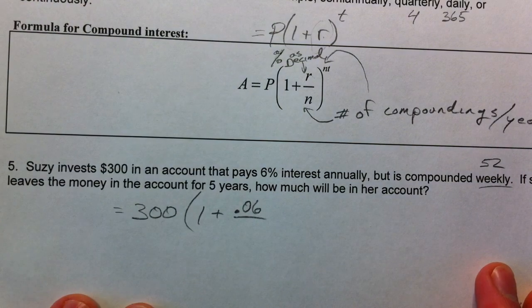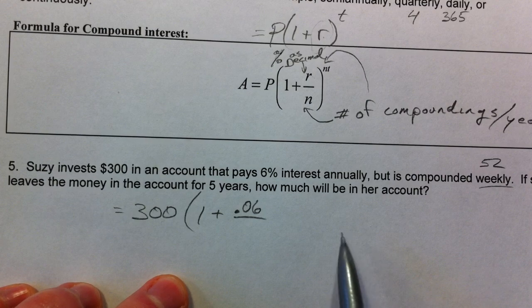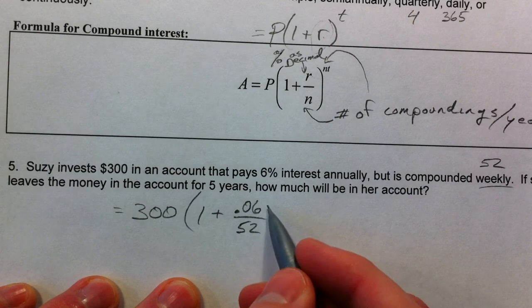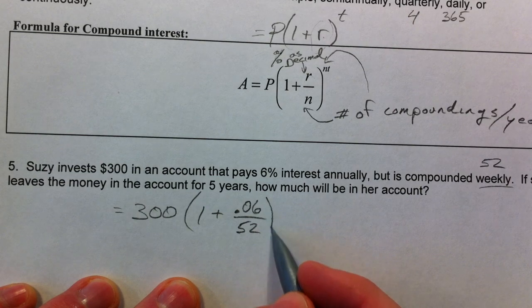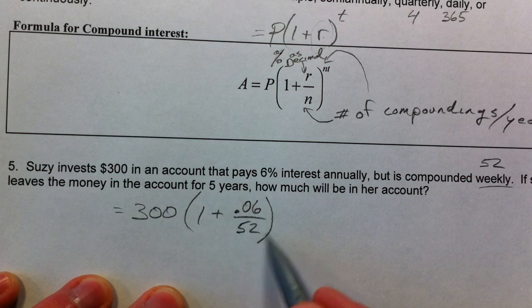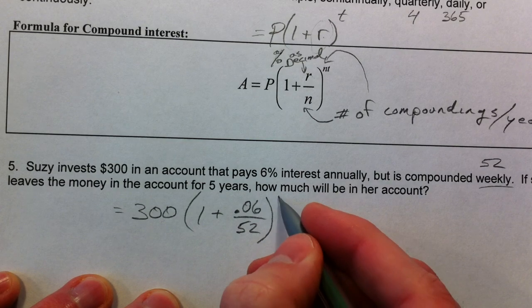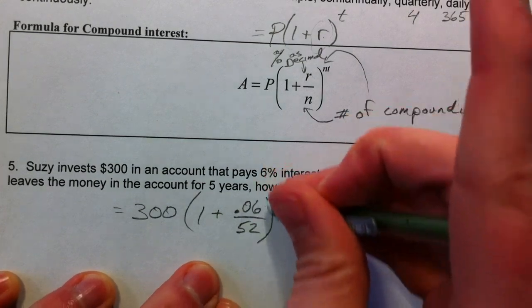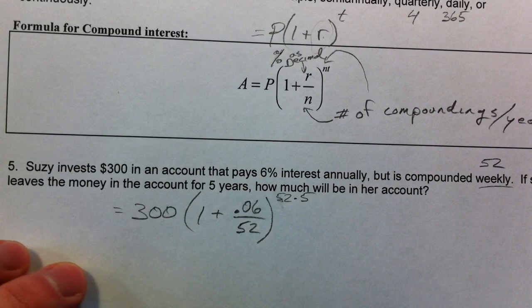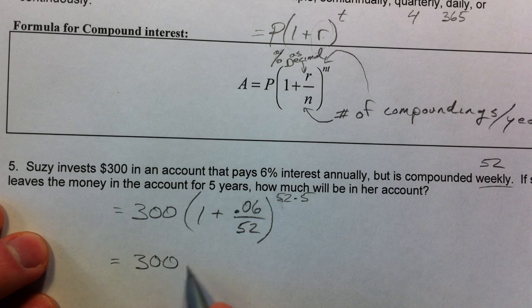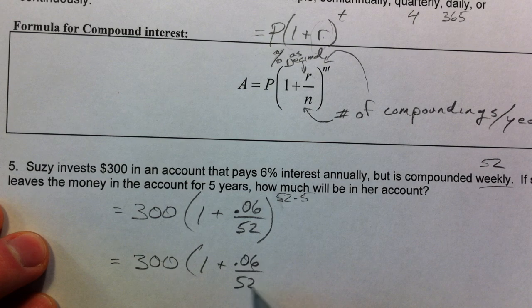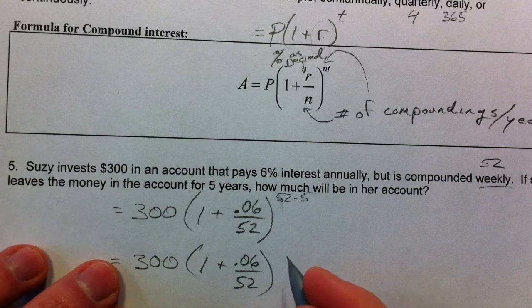That's one thing, one number you'll want to get used to because we're going to use it. And so we're going to divide that interest rate into 52 parts. She's going to get 1/52nd of it every week. And then we're going to raise it. And so in 5 years, how many weeks have passed? Well, 5 years. And I'm going to put it up there. So 52 weeks every year. So 52 times 5 years. So 300 times 1 plus 0.06, and then 52 times 5 is 260.